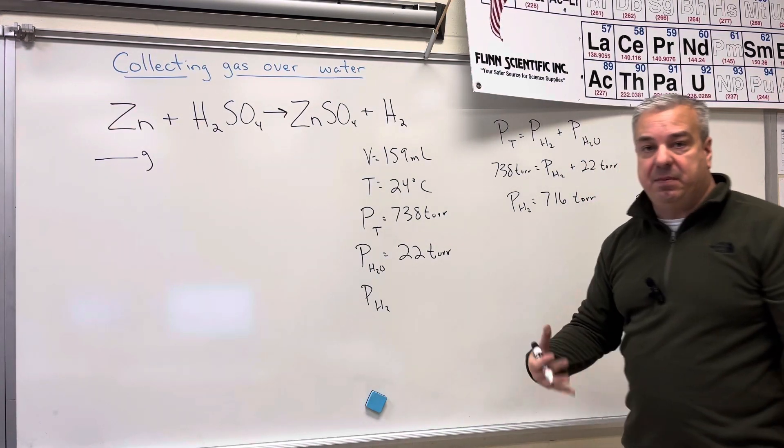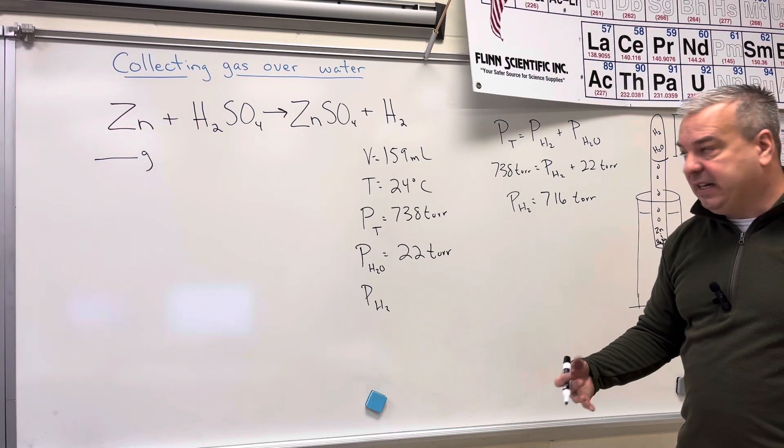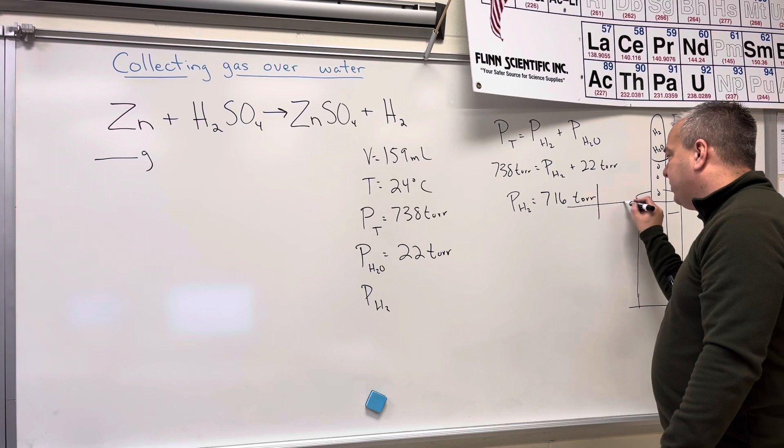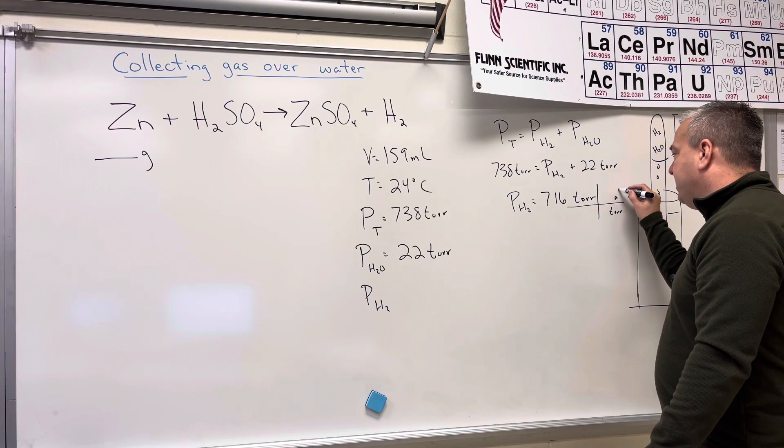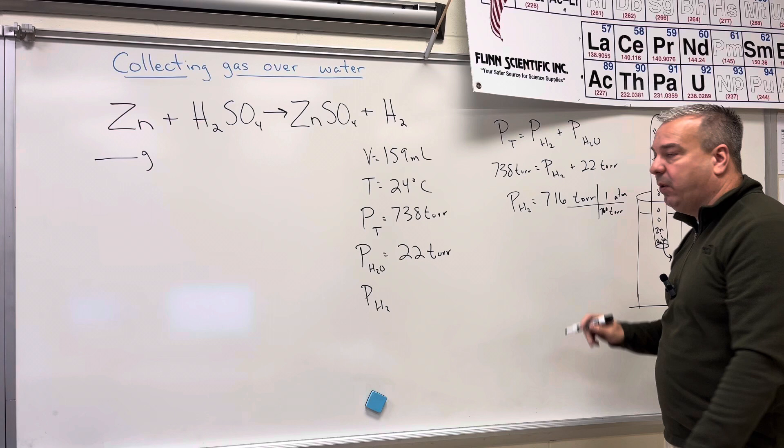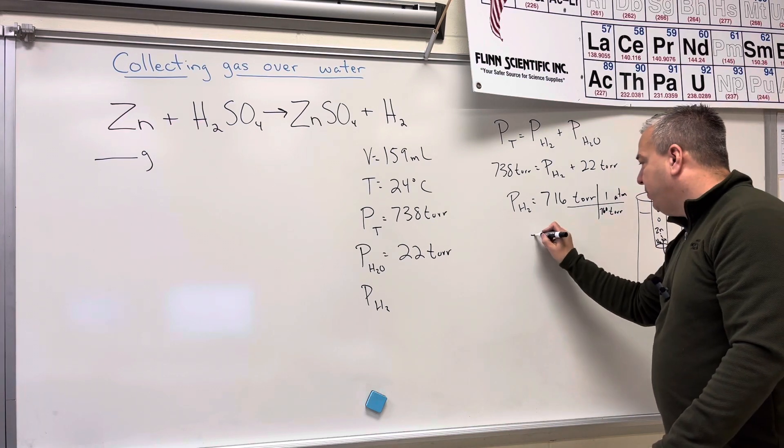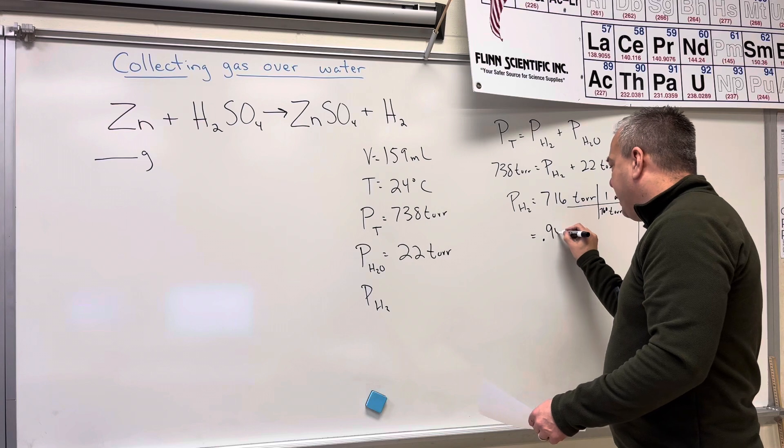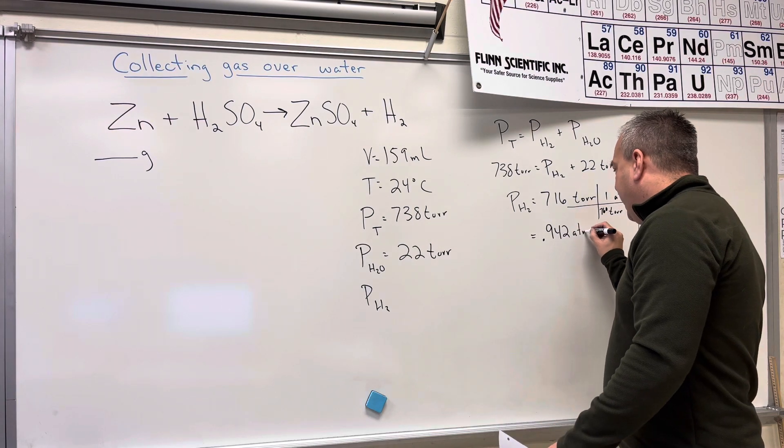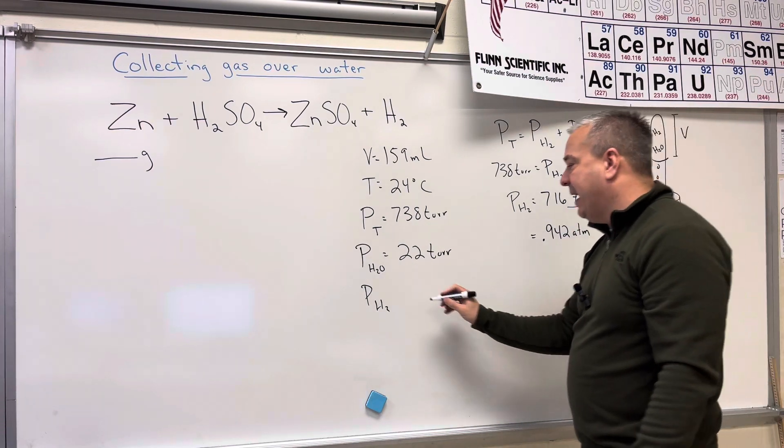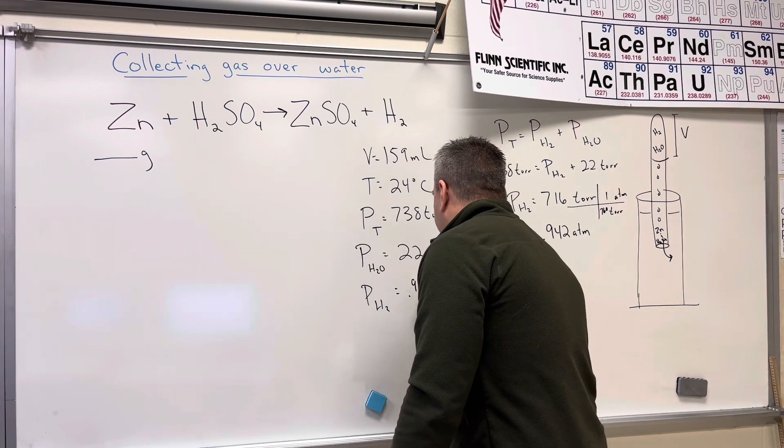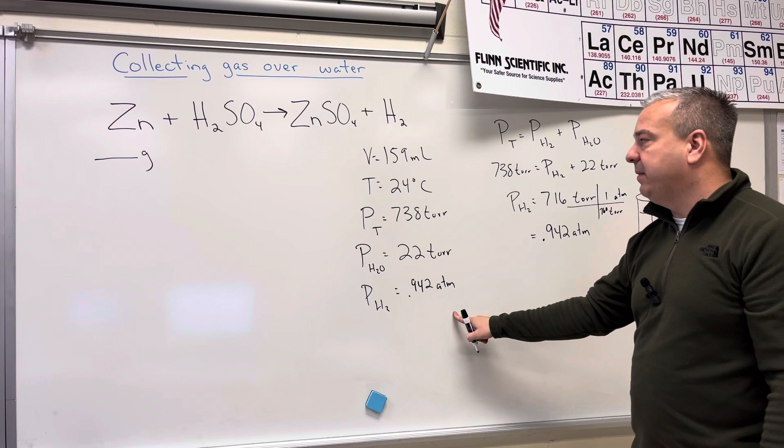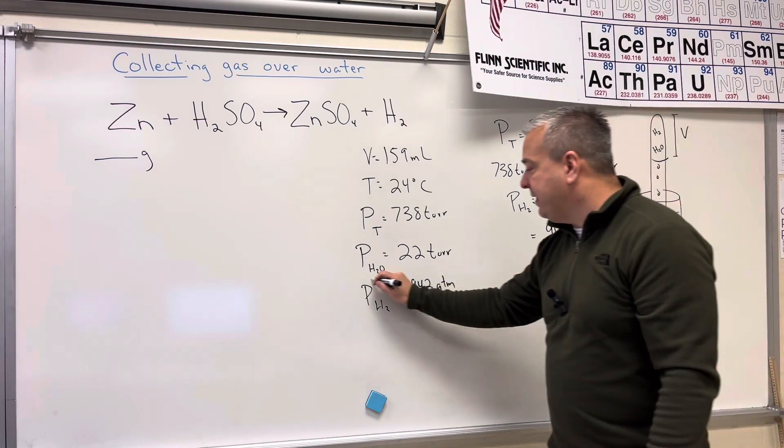Of course, I'm going to be using PV equals NRT, and I don't like things in torr. I like them in ATM. So I'm going to convert the torr into ATM. There are 760 torr for every one ATM. So this pressure of just the hydrogen is going to be 0.942 ATMs of just the hydrogen.